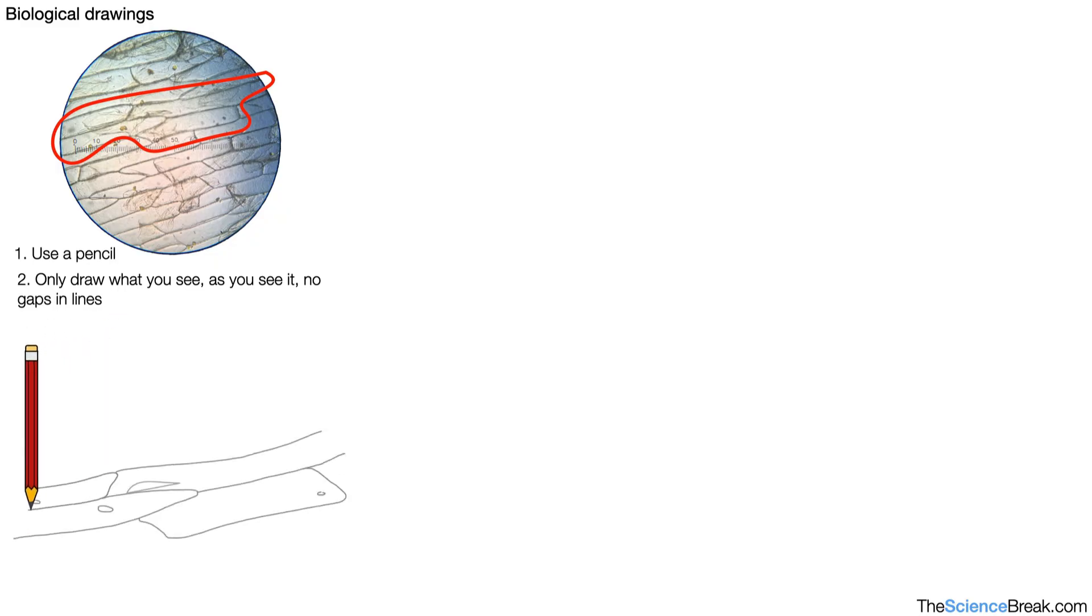Biological drawings. Here is a photograph of some cells seen through a microscope. We're going to draw these cells here that I've chosen. First step, make sure we use a pencil. And we only draw what you see as you see it and no gaps in the lines between the cells. So here we can start drawing. We can continue drawing using the rules for number two.